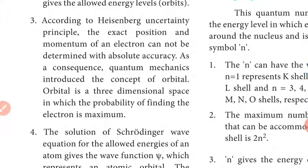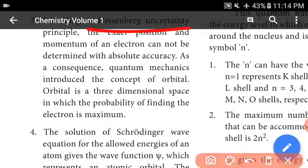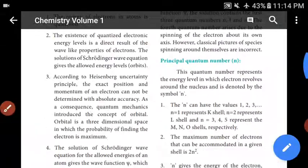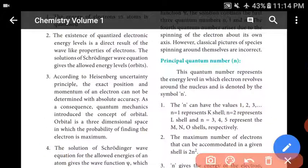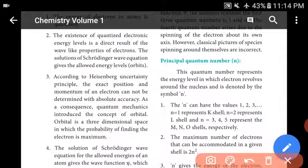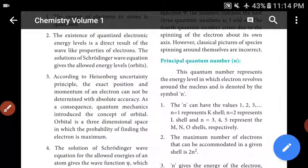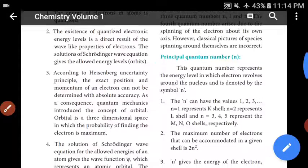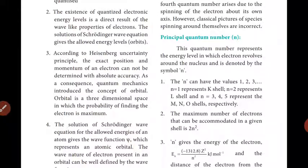According to Heisenberg's Uncertainty Principle, the exact position of an electron cannot be determined simultaneously with its momentum — they cannot both be calculated with complete accuracy at the same time. Because of this situation, we have to introduce quantum mechanics.